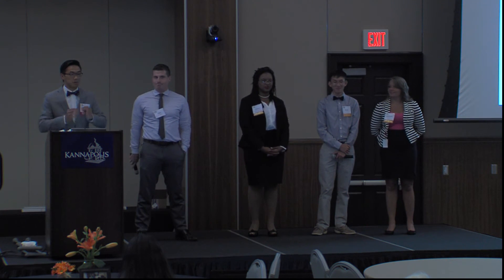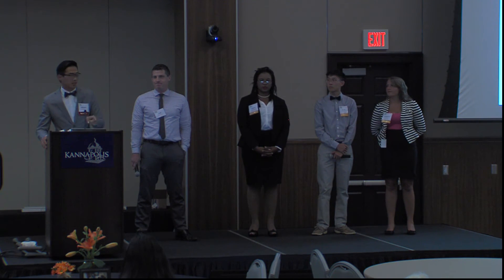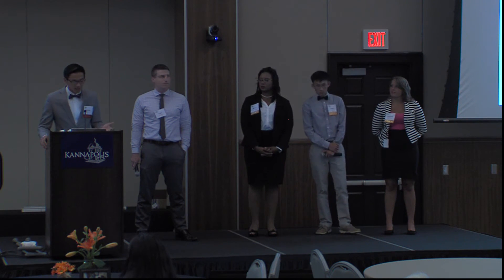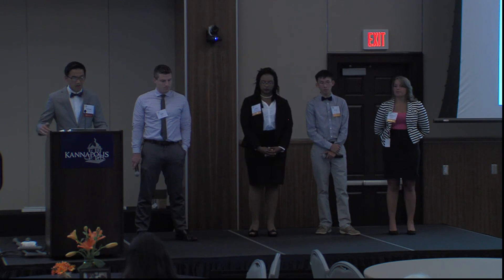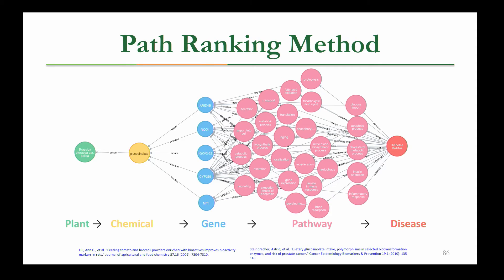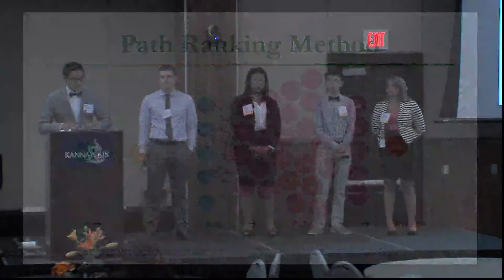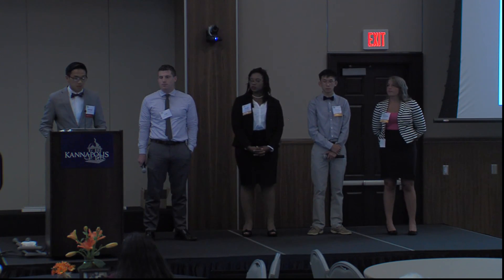We want to bring it full circle and answer why broccoli is healthy. We have a query going from the plant all the way to human disease — specifically broccoli and diabetes. The query returns a series of paths showing how glucosinolates derived from broccoli affect specific genes and pathways associated with diabetes. Glucosinolate increases the gene expression of NQO1, which has been associated with oxidative stress and detoxification — both also associated with the development of diabetes. From this, we're finding what's already known, and in the future we can find what is not yet known.